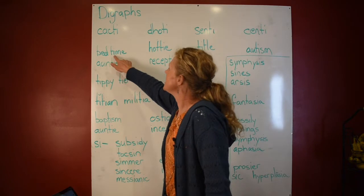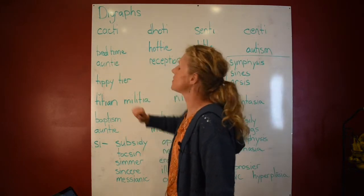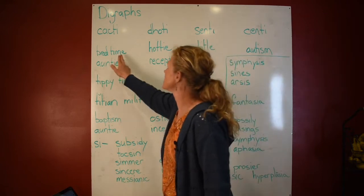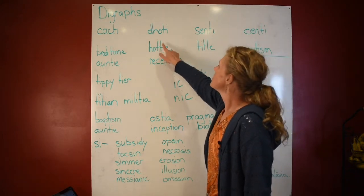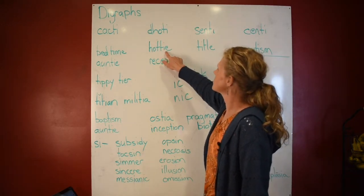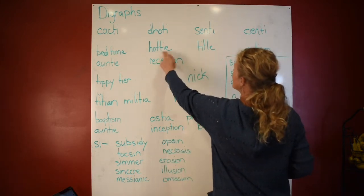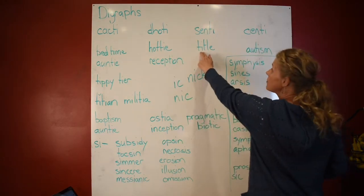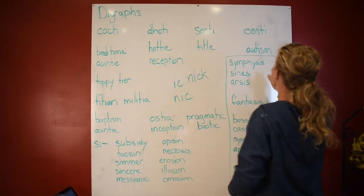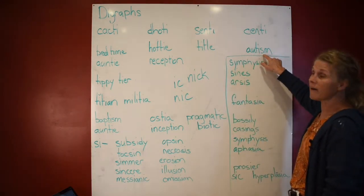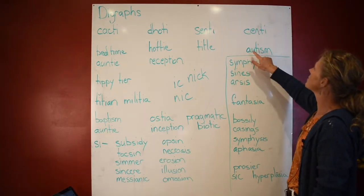Look at 'centi' — the TI is not followed by a consonant, so you know right off the bat that is not a digraph. That says 'bedtime.' Here, TI is followed by a vowel — but this is also a suffix, and it's not a digraph. That says 'hottie.' TI is not a digraph at the beginning of words. So 'title' — TI at the beginning. But here in the middle, it's not followed by a vowel. So this says 'autism' — saying its short sound.